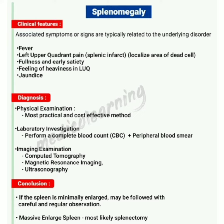Via physical examination, which is the most practical and cost-effective method. Laboratory investigations include a complete blood count (CBC) plus peripheral blood smear. Imaging examinations include computed tomography, magnetic resonance imaging, and ultrasonography.